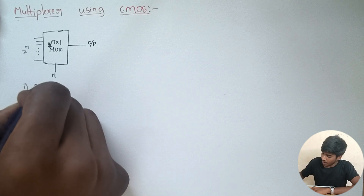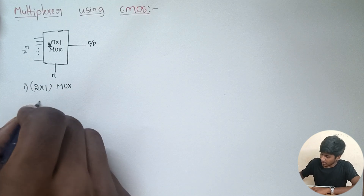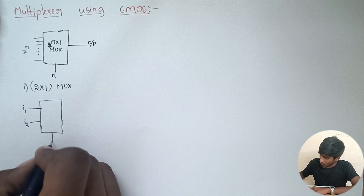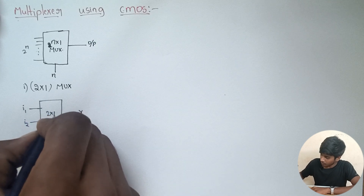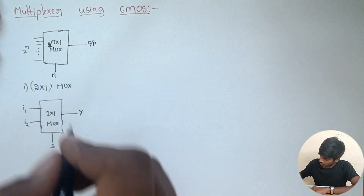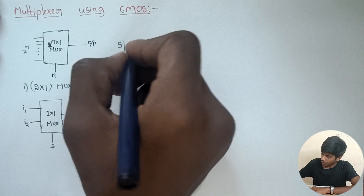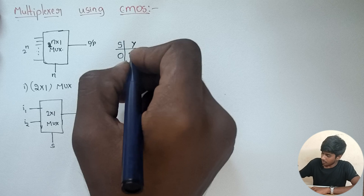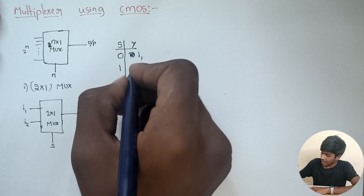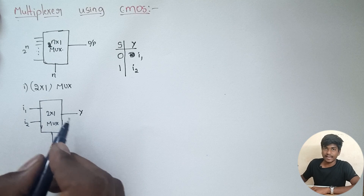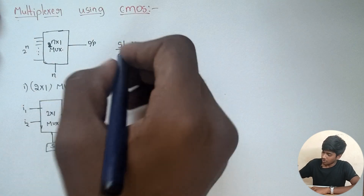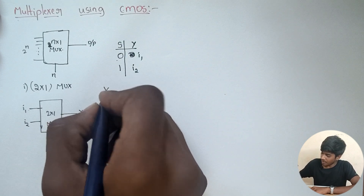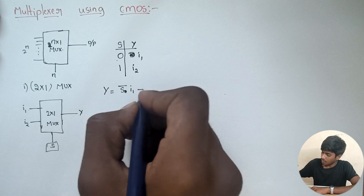Now let us look at the 2 by 1 multiplexer. For a 2 by 1 multiplexer, we will be having 2 inputs i1 and i2, one select line, and output y. When select line is 0, we will be having output i1, and when select line is 1, we will be having output i2. So the expression for y will be equal to S bar i1 plus S i2.